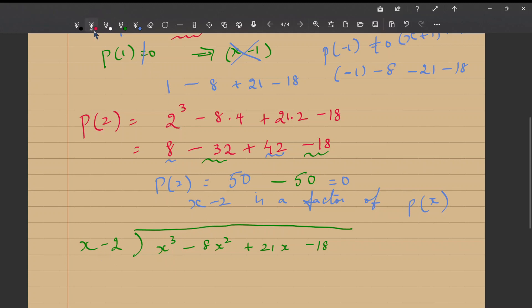So multiplying I get x into x² is x³, minus x² into -2 is -2x². Right? Now, I have to subtract both of them. So subtracting this minus becomes plus because I am subtracting. So -8 + 2 is -6x².